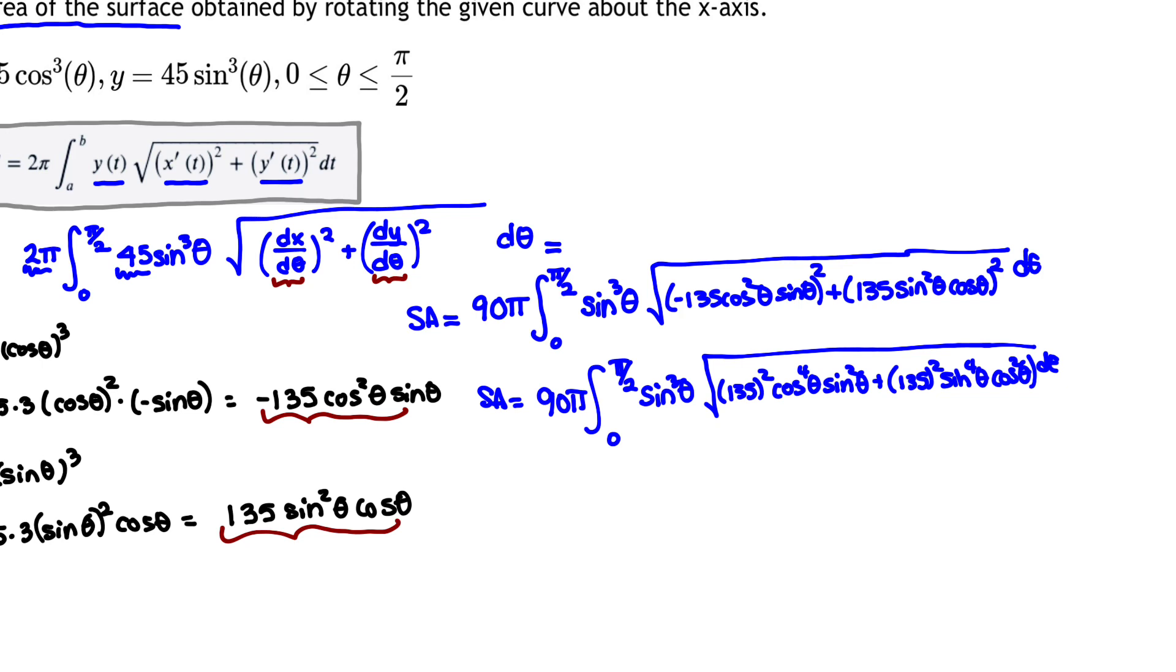To simplify underneath the square root, I notice I have a common factor of 135². I also have a common factor of sin²θ and cos²θ that I can take out from those two terms. So the surface area is 90π times the integral from 0 to π/2 of sin³θ. I'm going to factor out underneath that square root 135², cos²θ, and sin²θ.